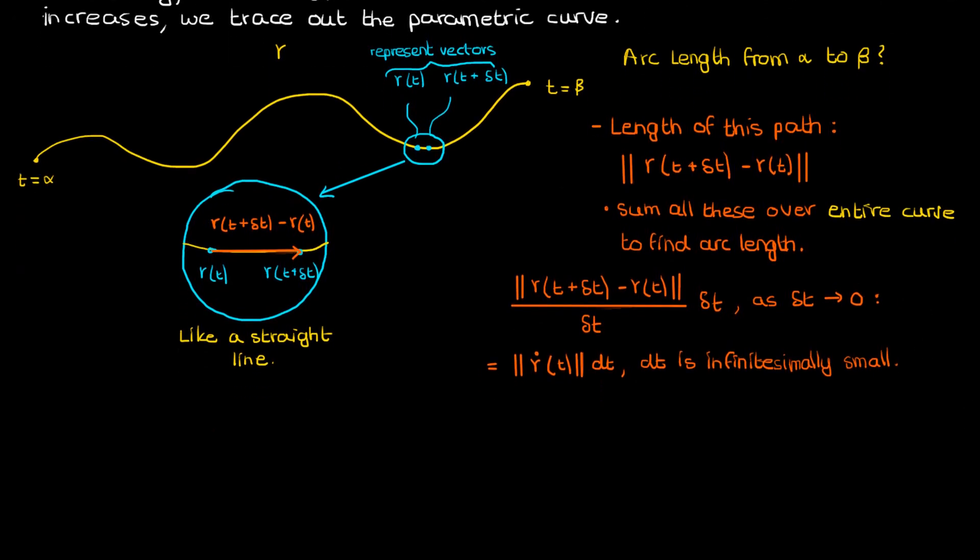Now, as mentioned earlier, I need to sum all of these little lengths over the entire curve in order to get the arc length, and the main way to perform this summation is to integrate the magnitude of γ̇(t) with respect to t. Note that the integral goes from α to β because we're integrating over the parameter t, and α and β are the extreme values of t on either end of the curve.